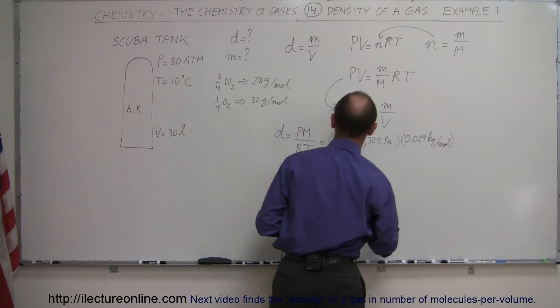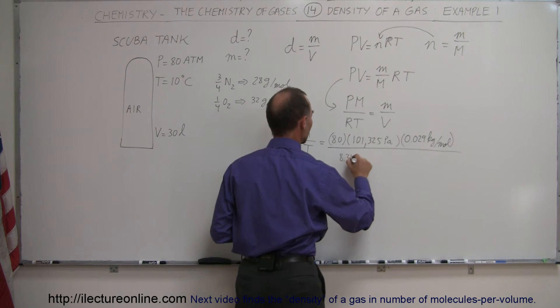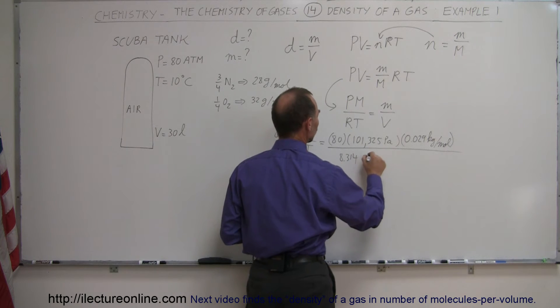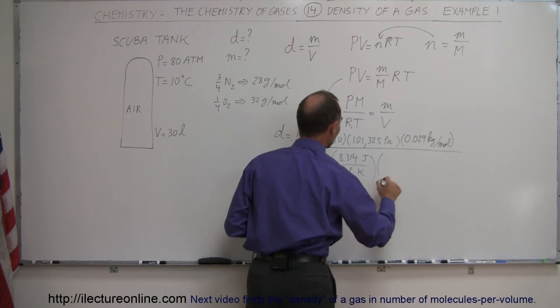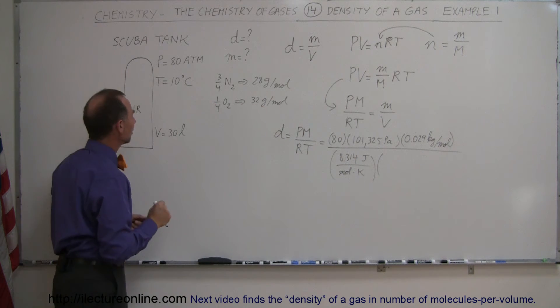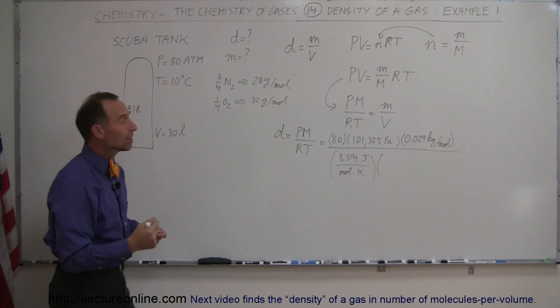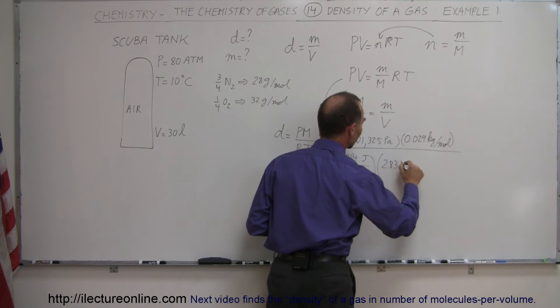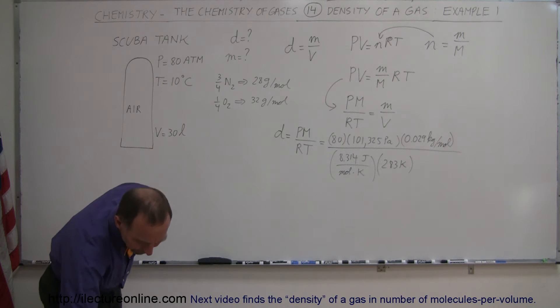So we say 29 grams which is 0.029 kilograms per mole, so that's the molar mass in kilograms divided by the gas constant, 8.315, that would be joules per mole times kelvin, and the temperature. 0 degrees centigrade is 273, 10 degrees centigrade is therefore 283 kelvin, and that should be the density in kilograms per cubic meter.